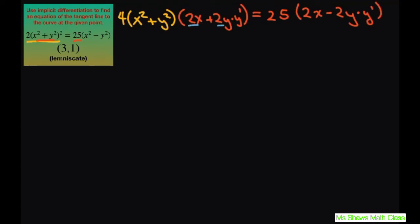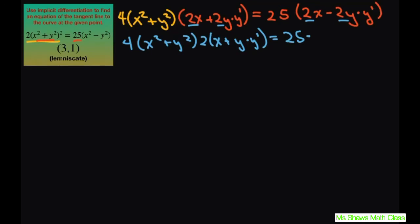We have these 2s in here, so let's factor those out. I'm going to factor out a 2 on each side. The reason I did that is that these numbers are going to get kind of big, so I want to go ahead and divide both sides by 2. You could have just looked at this line and crossed those 2s out if you wanted to.